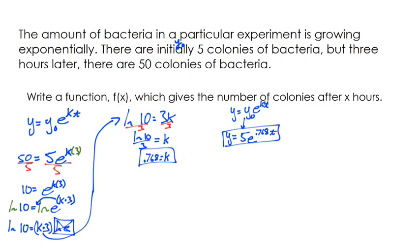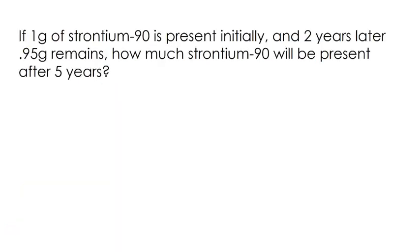Let's do another one. It says one gram of strontium-90 is present initially, and two years later .95 grams remain, so it's very slowly decaying. But if that's the case, how much strontium-90 will be present after five years? This is radioactive decay.